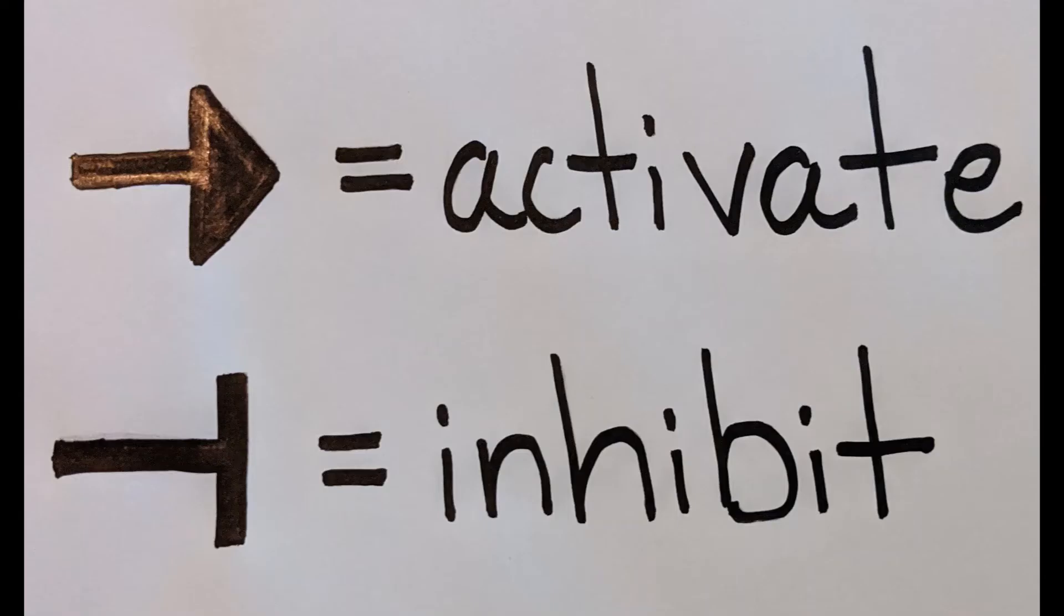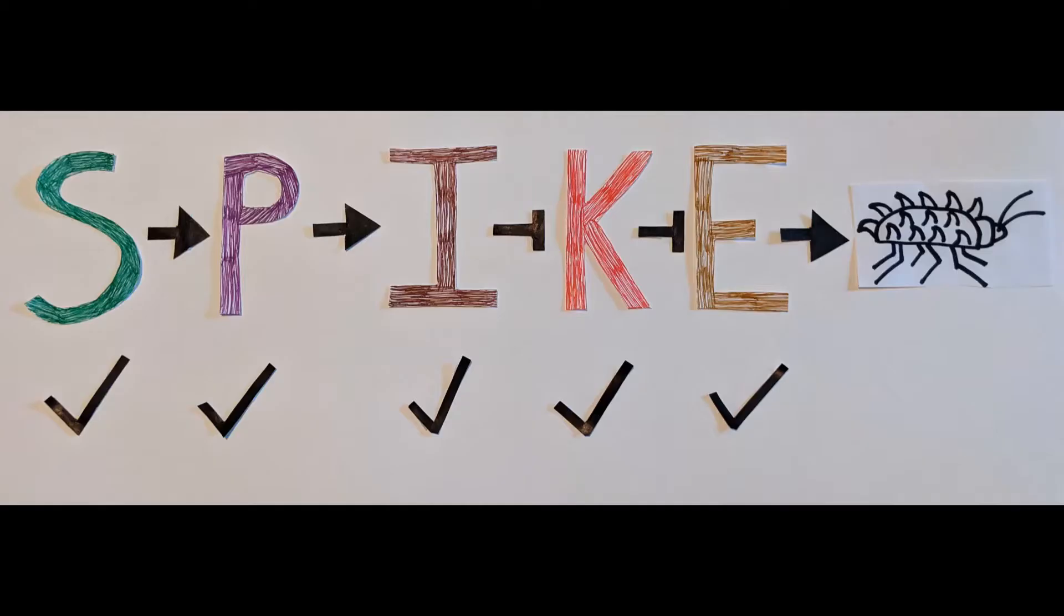The arrow in between the genes means to activate and the T-bar means to inhibit. If the pathway were to run as currently shown, the cells would have spikes, but sometimes mutations occur. When a mutation occurs, we get a variety of spiky and not spiky cells. We are given four different mutations and will determine if they cause spikes or not.